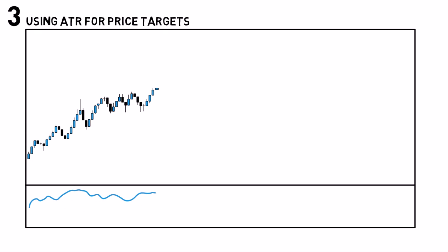Using ATR for price targets. ATR is especially great for day traders. The daily ATR reading for the pair is 72 pips, and the opening price of the particular day is 1.30. So if you are planning to close your trades at the end of the day, take note that it is very unlikely that the rate will go much higher than 1.3072 or much lower than 1.2928.